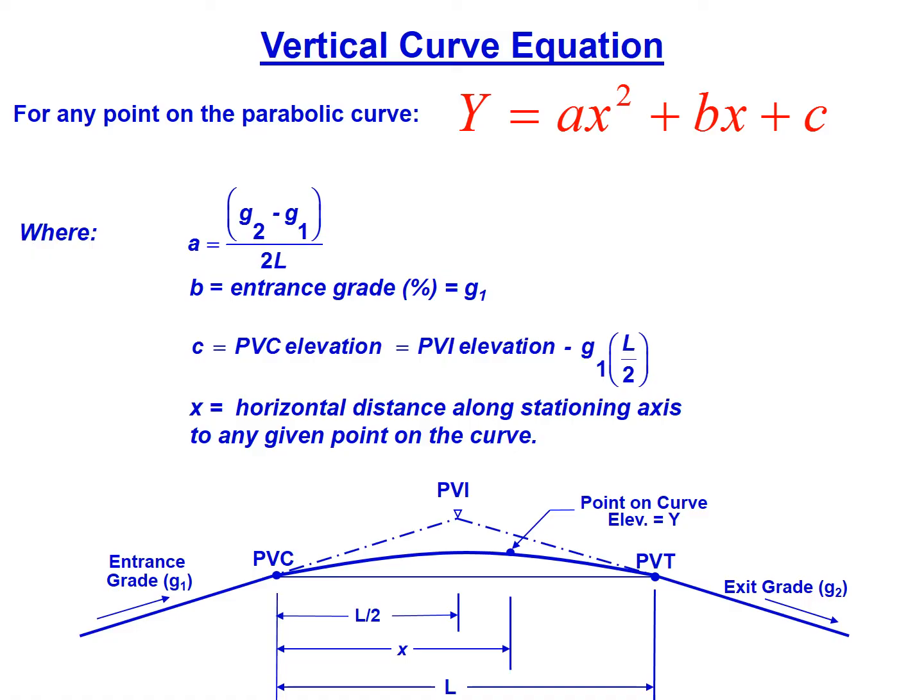X in this equation is the horizontal distance along the stationing axis to any point of interest on the curve. We can find the elevation at any point along the curve, X, between 0 and L. We can't exceed those bounds because we'd then be on the tangents or the grades that are outside the PVC and the PVT.